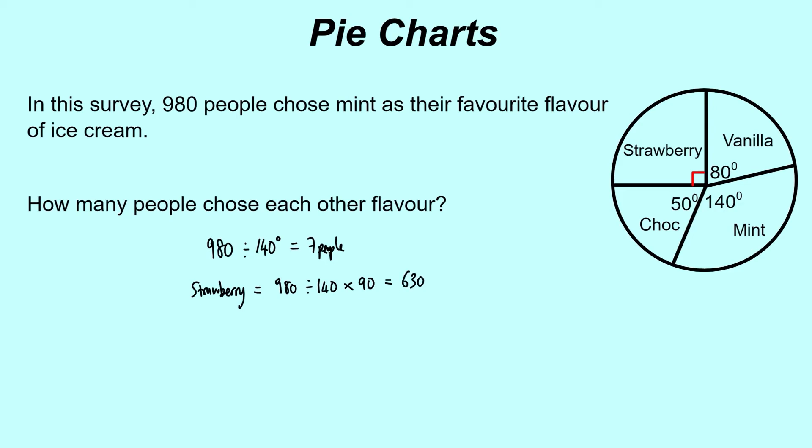We'll do the exact same kind of calculation. We're always scaling down that initial value, scaling it down to one degree and scaling it back up. So it's 980 divided by 140, which gives us the one degree. But for vanilla, we're multiplying by 80, not 90, so that gives us 560.